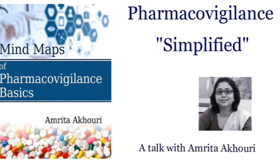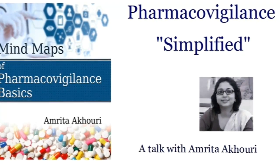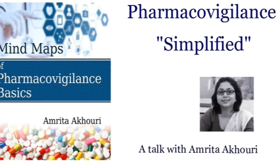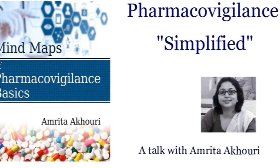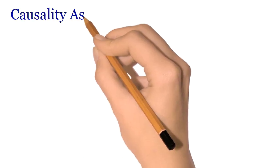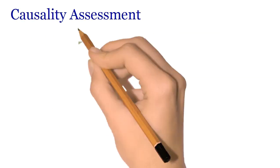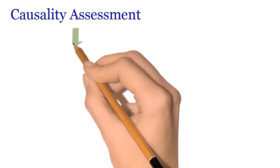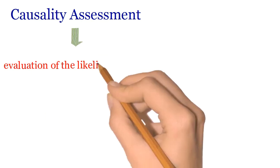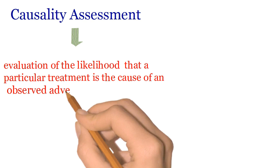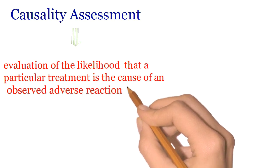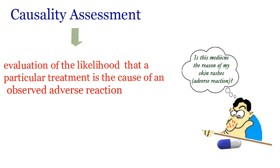There must be a cause behind every adverse reaction, and the root cause identification is a critical aspect of pharmacovigilance. Causality assessment refers to the evaluation of whether the occurrence of an adverse reaction is because of the administered medicine or not. How is the causality assessment performed?